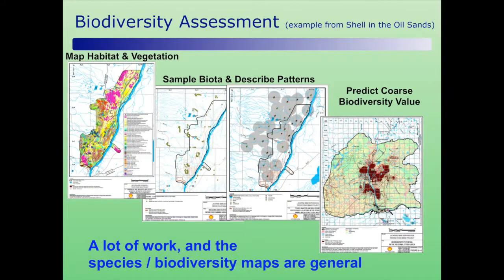I'll start with a very brief overview. This is an example from the Shell EIA done in the oil sands — it's not a great or bad example, just an example of the status quo. Ordinarily, folks map the vegetation and habitats at the place where they're going to do the development, sample some critters and key species in and around the area, and from that develop fairly coarse models of how biodiversity exists and may be affected by development.